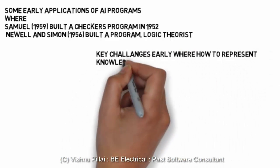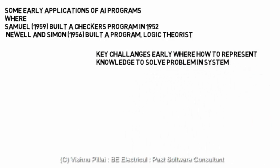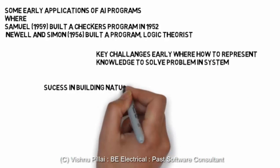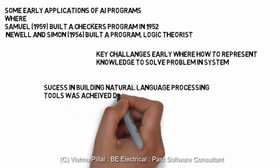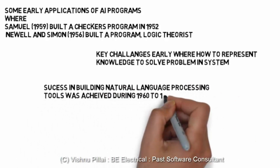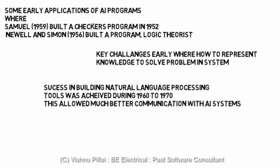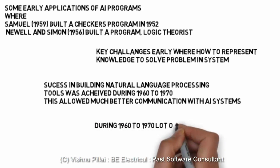Some of the key challenges faced during the early phase of Artificial Intelligence were how to represent knowledge to solve problems. Knowledge is currently represented in a system known as a knowledge base. Success in building natural language processing tools was also not achieved until 1960, with much work continuing until 1970.